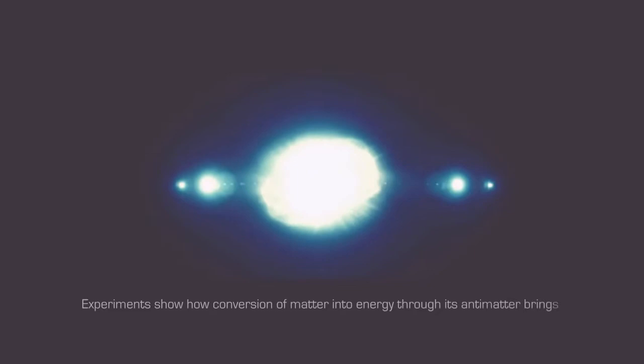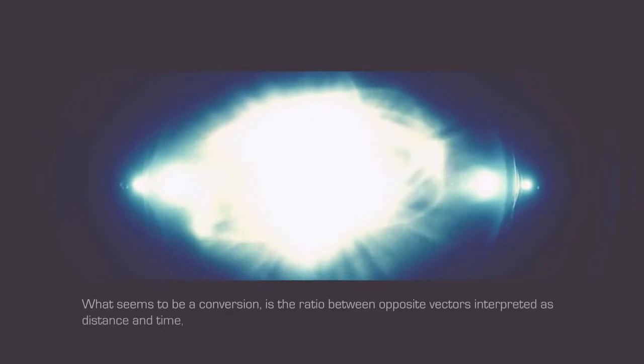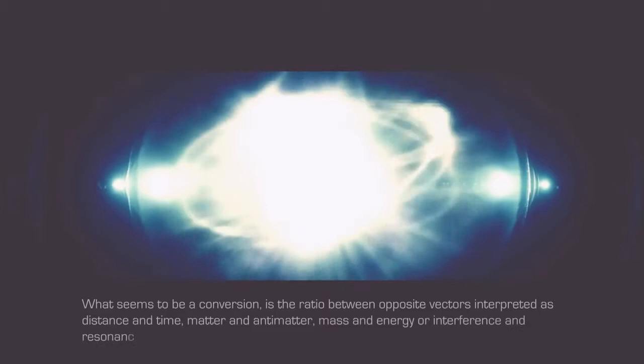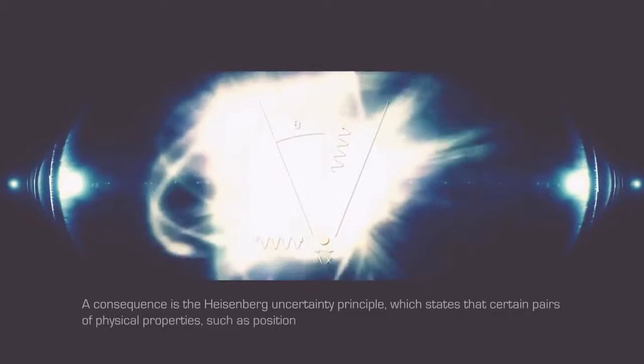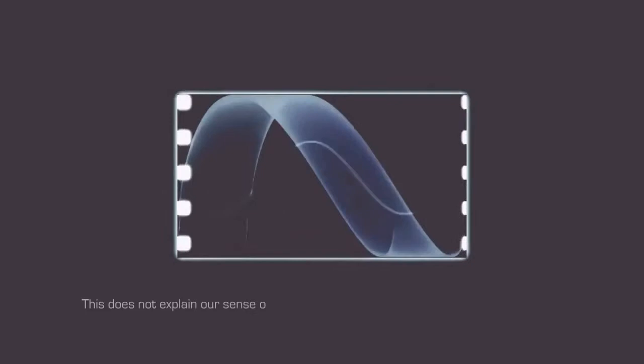Experiments show how conversion of matter into energy through its antimatter brings about gamma rays with exact opposite momentum. What seems to be a conversion is the ratio between opposite vectors interpreted as distance and time, matter and antimatter, mass and energy or interference and resonance within the abstract arrow of time of c. The sum of opposite vectors is always zero. This is the reason for the symmetry or conservation laws in physics, or why, at the speed of c, time and space are zero due to length contraction and time dilation. A consequence is the Heisenberg uncertainty principle, which states that certain pairs of physical properties such as position and momentum cannot be known simultaneously to high precision. In a sense, a single particle is its own field. This does not explain our sense of continuity, where c cancels itself out within its own required interval.